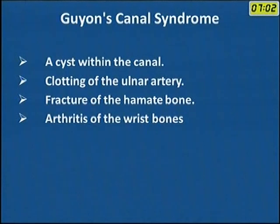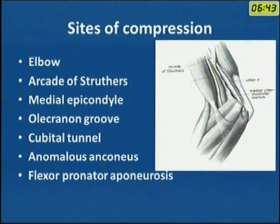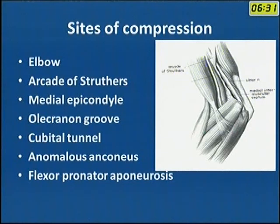In Guyon's canal, causes include a cyst in the canal, clotting of the ulnar artery, and fracture of the hamate bone. The site of compression at the elbow level includes the arcade of Struthers, the medial epicondyle, the olecranon groove, the cubital tunnel, the anomalous anconeus, and the flexor-pronator aponeurosis.